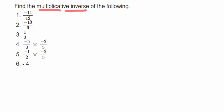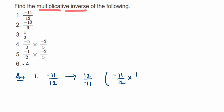So multiplicative inverse is very simple — you just take the reciprocal of the given rational number and that will be the multiplicative inverse. For the first problem, we have -11/12. The reciprocal of -11/12 is 12/(-11). Because -11/12 multiplied by 12/(-11) gives us 1 — you cancel out every number and get the answer 1.